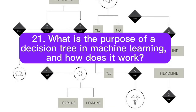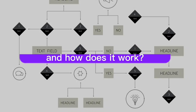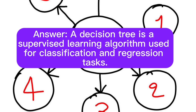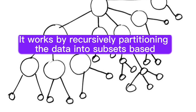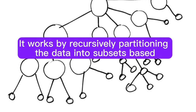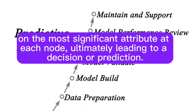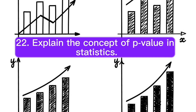Question 21: What is the purpose of a decision tree in machine learning, and how does it work? Answer: A decision tree is a supervised learning algorithm used for classification and regression tasks. It works by recursively partitioning the data into subsets based on the most significant attribute at each node, ultimately leading to a decision or prediction.